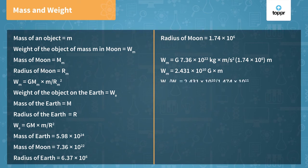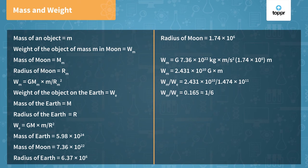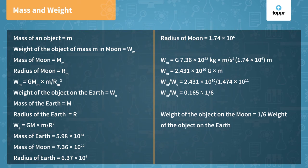By dividing the equations, Wm / We = 2.431 × 10¹⁰ / 1.474 × 10¹¹ = 0.165, which is approximately equal to 1/6. So the weight of an object on the moon divided by the weight of an object on the earth equals 1/6 — that is, the weight of an object on the moon is one-sixth of its weight on the earth. It will be one-sixth of your weight on the earth. We have learned the difference between mass and weight: mass is constant everywhere and does not differ from place to place, while weight differs from place to place. The weight of any object on the moon is one-sixth of its weight on the earth.